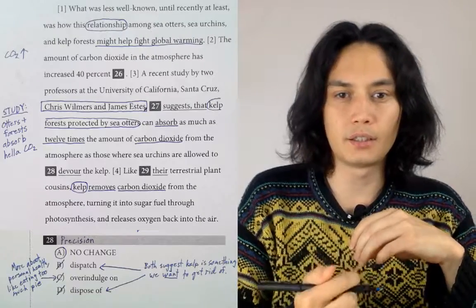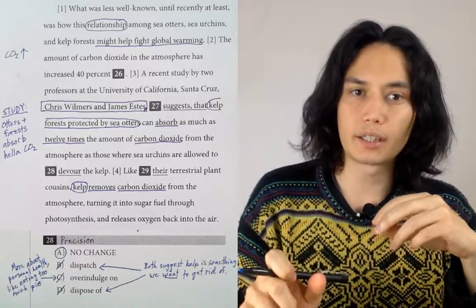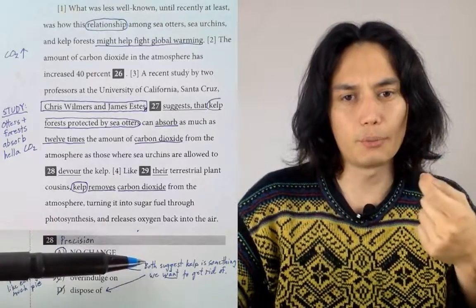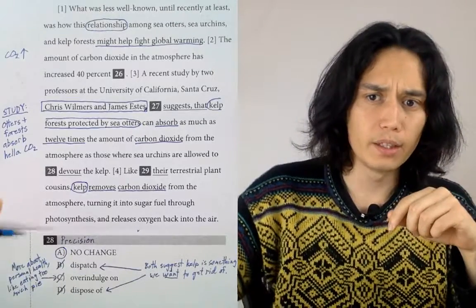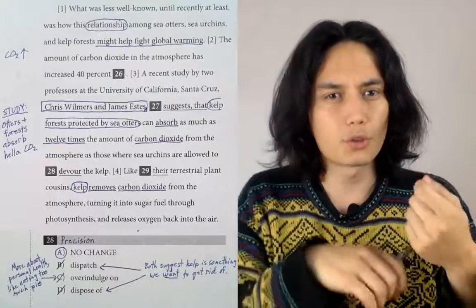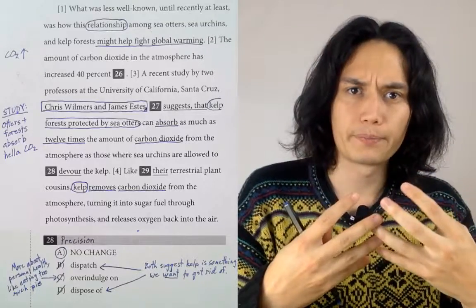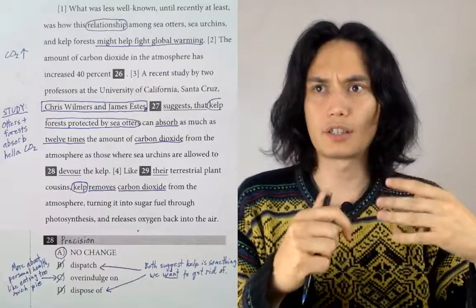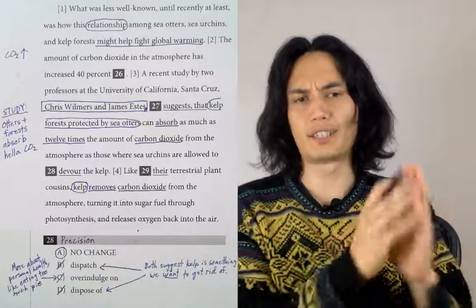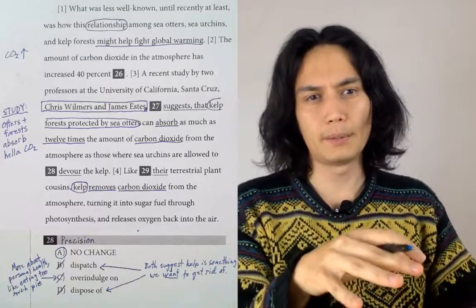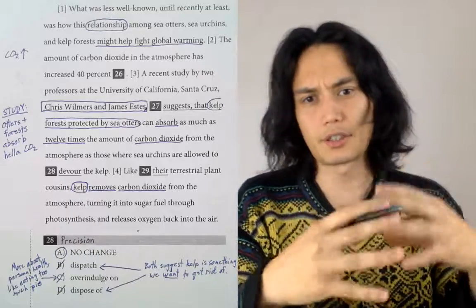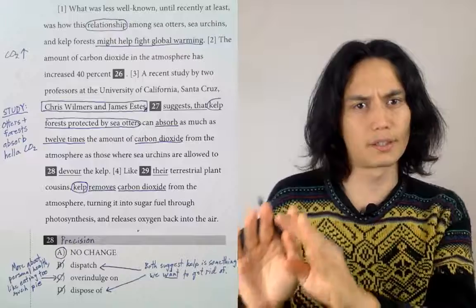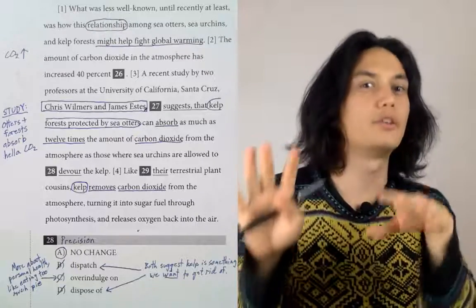Answer choices B and D I want to take together because they're similar in terms of where they're slightly off. They both suggest that kelp is the kind of thing that we want to get rid of. Answer choice B, this word dispatch, we use to describe an opponent or a problem. You could say that a really excellent boxer dispatched their opponent in the fight. You can also dispatch a problem.